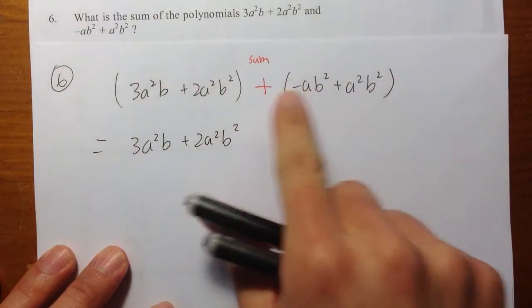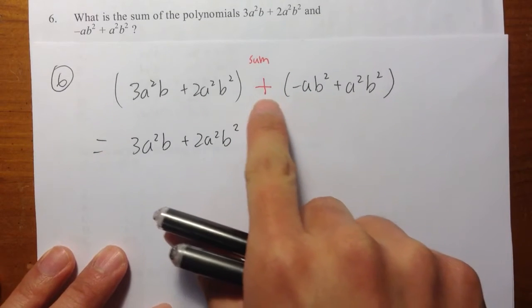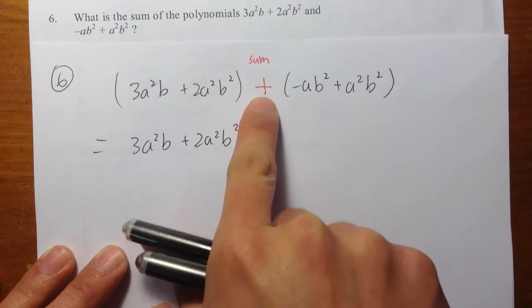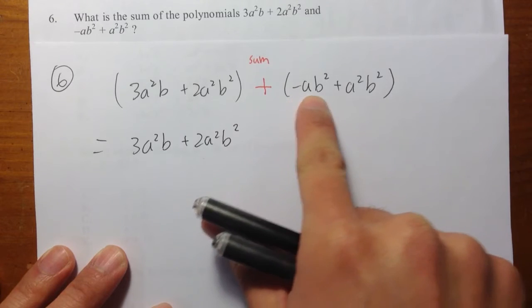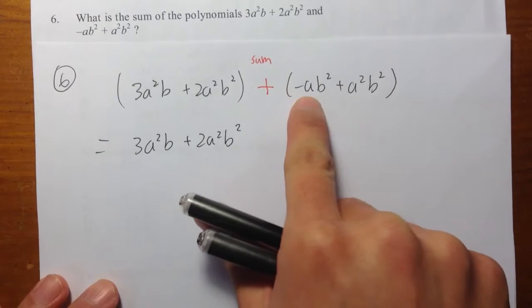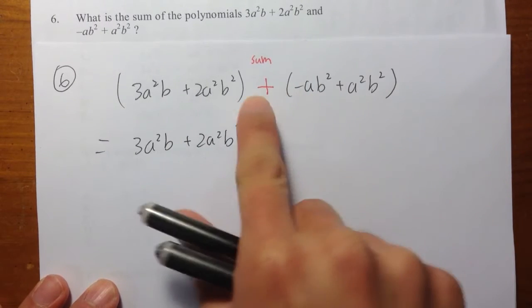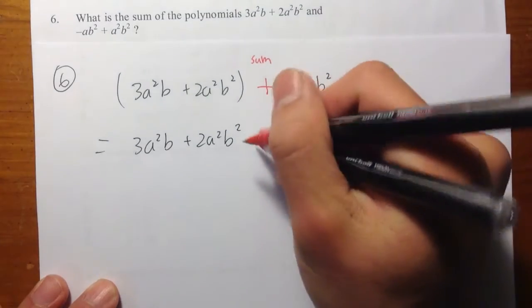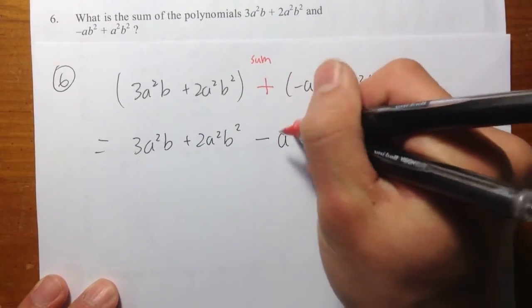And for this polynomial, for these two terms right here, you can think about this as positive times -ab². Positive times a negative, which is still a negative, so -ab².